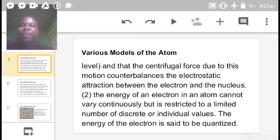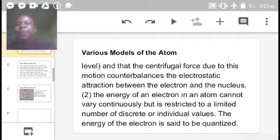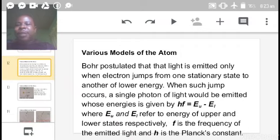The energy of the electron in an atom cannot vary continuously but is restricted to a limited number of discrete or individual levels. This means that each electron in a certain orbit has its own specific or discrete energy, not a continuous energy. This energy of the electron is said to be quantized in Bohr's atomic model.